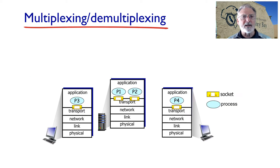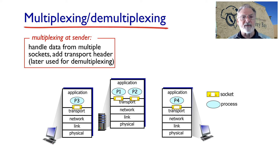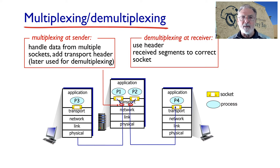Via multiplexing and demultiplexing, the transport layer extends the delivery service between two end systems to a delivery service between processes running on the end systems. Multiplexing does the job of gathering the application layer data into chunks, encapsulating them and passing them to the network layer. Demultiplexing is the process of taking the received chunks or segments from the network layer, de-encapsulating them, and sending them to the application layer.